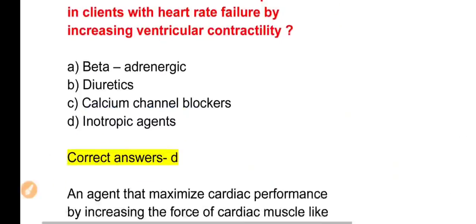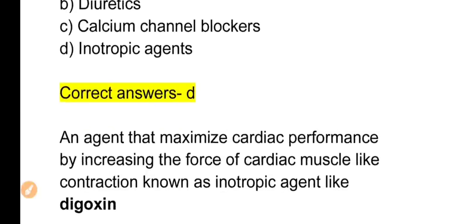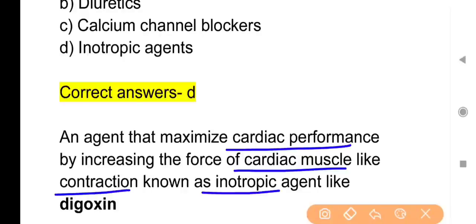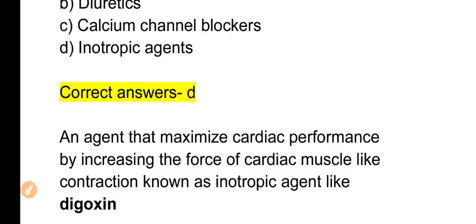Let's learn some important points about Ionotropic Agents. An agent that maximizes cardiac performance by increasing the force of cardiac muscle contraction is known as an Ionotropic Agent. Ionotropic Agents increase the power of contraction but do not increase heart rate. Their example is Digoxin.